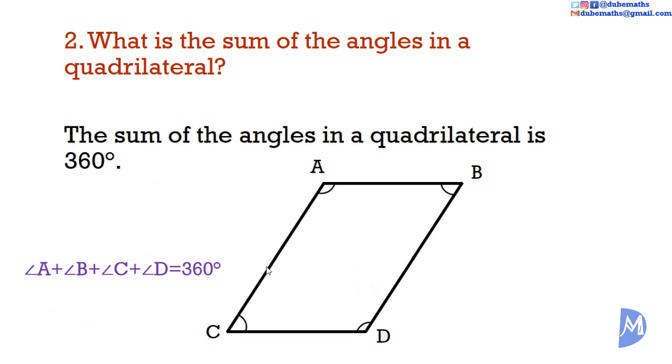The easiest way to remember is to realize that a diagonal divides the quadrilateral into two triangles with all the angles at the vertices of the quadrilateral. Thus, the angles in the triangles and the quadrilateral are exactly the same. So, since the angles in a triangle add up to 180 degrees, the angles in two triangles add up to 360 degrees.